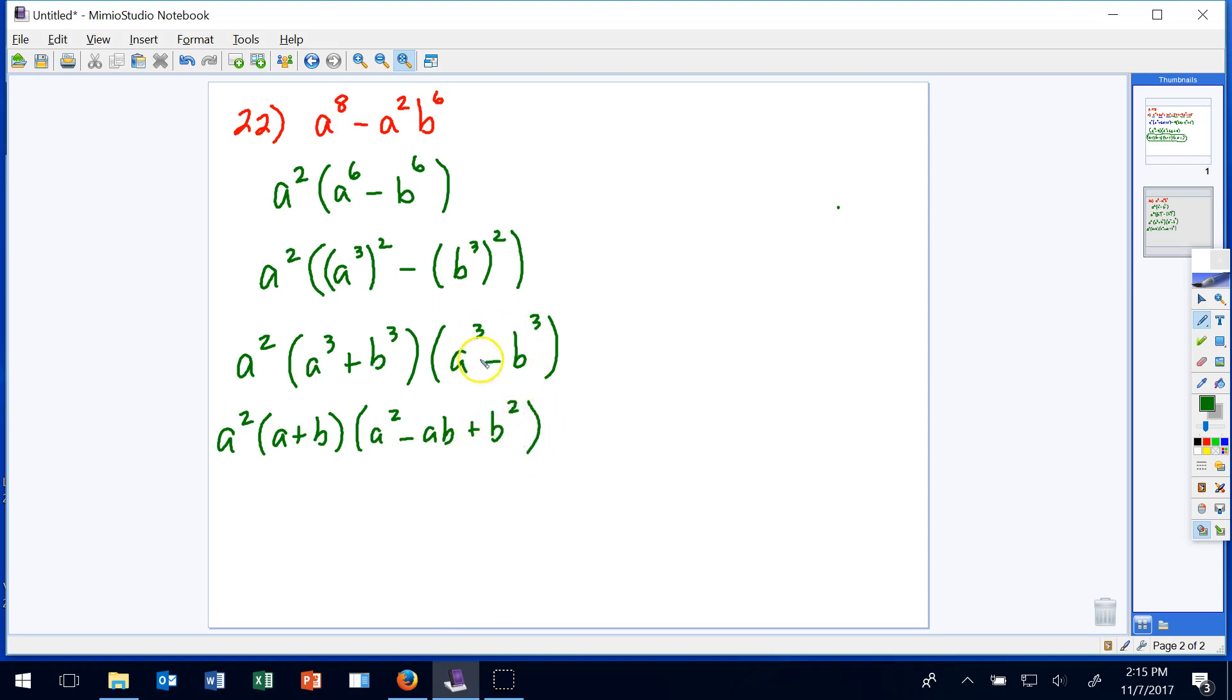And now we're going to factor the difference between two cubes: cube roots, square the first, plus multiply the a b together, plus square the last. And that's a long answer but that is the final answer. There is no other possible way to factor, and so that is your answer for number 22.